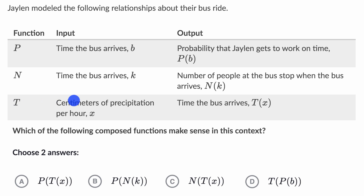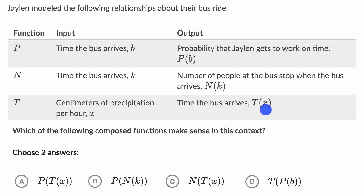And then function t: the input is centimeters of precipitation per hour, x, and this gives us the time the bus arrives as a function of that precipitation.